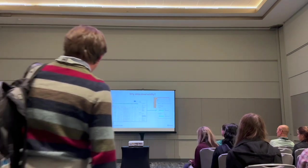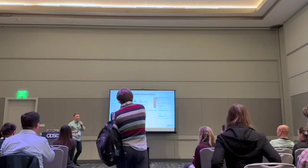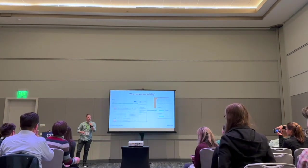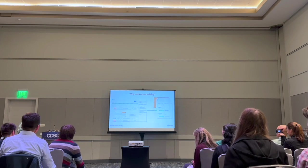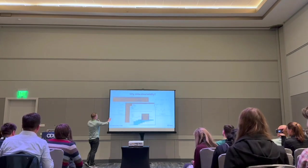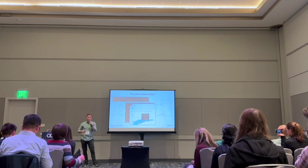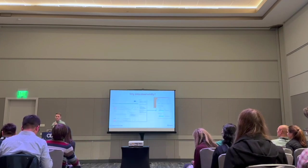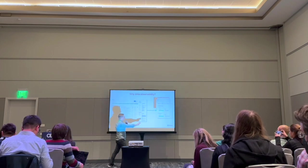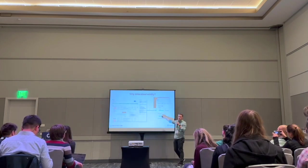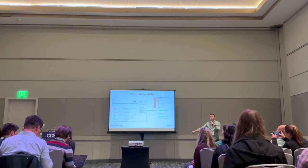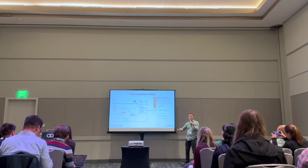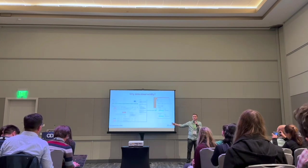We could also push those test results into the data catalog and then into the query editor, so we could put directly at the fingertips of the data scientist information about the quality of the data they're working with. When I go to look at a table now, I can not just see basic statistics about its structure and documentation, but I can see test statuses that tell me things about the content of the table itself. We could write complex tests across tables and columns, and even check distributions to see if they'd drifted recently. These checks are as flexible as whatever you can express in SQL.